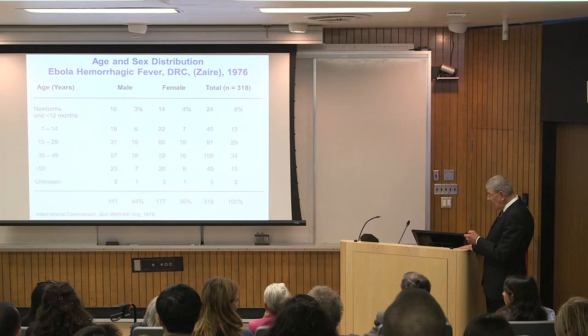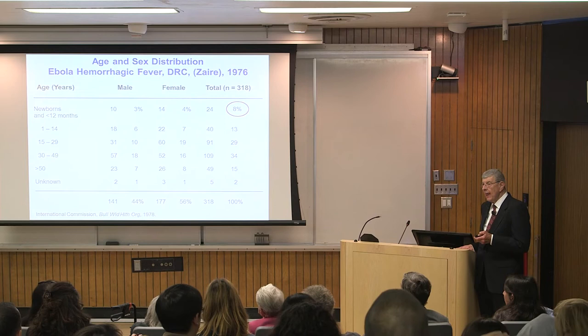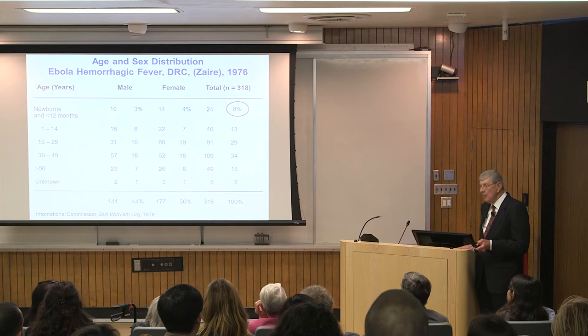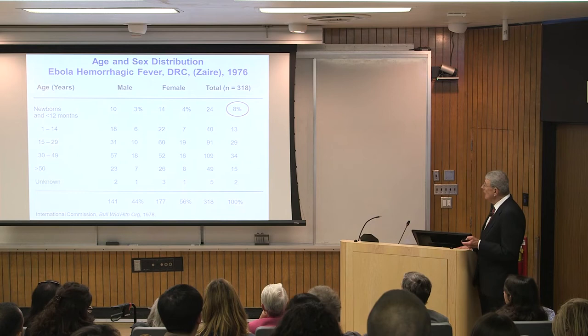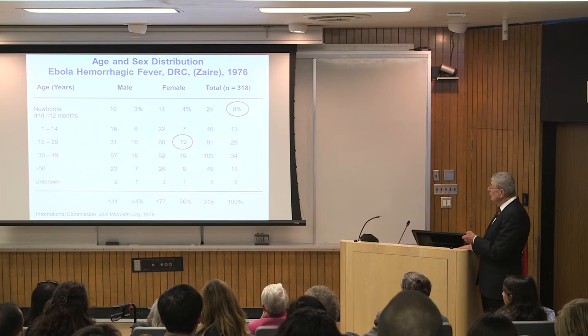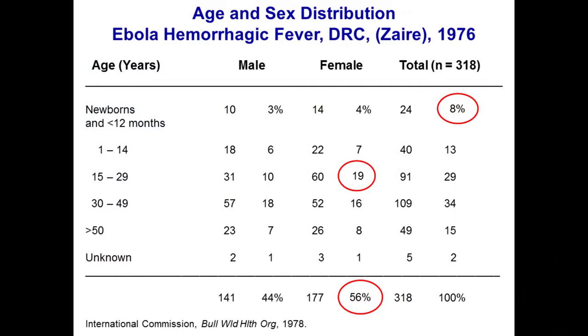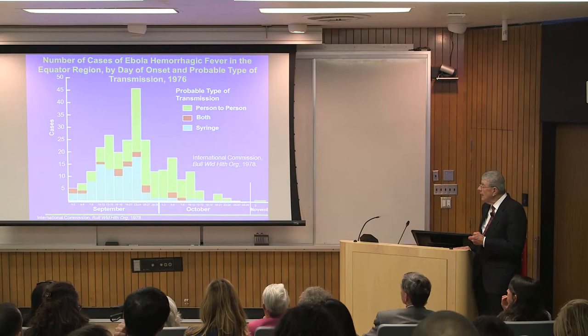Epidemiologically, of the 300 patients, we had newborns and pregnant women — pregnant women were at great peril. Their babies all died. Many pregnant women had uncontrolled bleeding. The 8% figure represents those young babies. Nineteen percent of all patients were women aged 15 to 29 — women everywhere take care of sick people, so there was a predominance of women among these 318 patients.